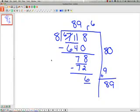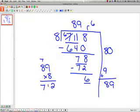How do I check this? Again, I put my quotient in, which is 89, into my calculator. Times it by 8. And then add my remainder, if I have one. 718. All right.